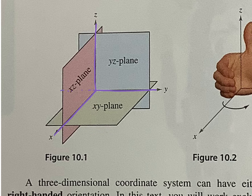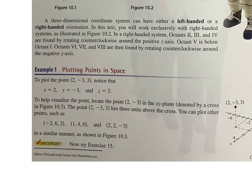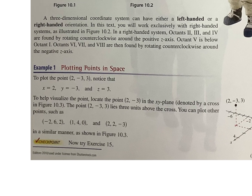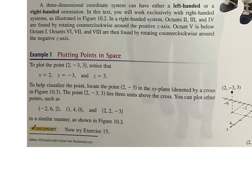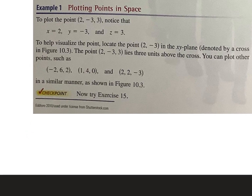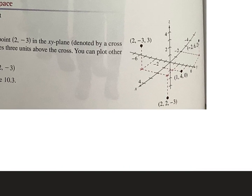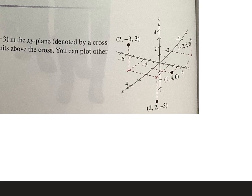It doesn't stop there — it continues, so we have the negative directions also. For example one, we have to plot points on WebAssign and on the quiz. You won't be asked to plot, but you'll have to pick which one, or it'll give you a graph like this and you'll have to be able to name the point.